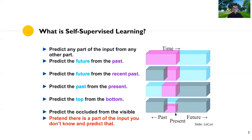Basically, the idea is that you pretend there's a part of the input you don't know and predict that — but actually you do know. So in that case, you can use that as a label.